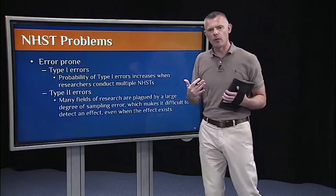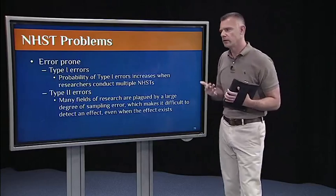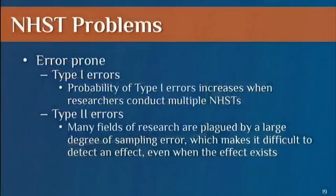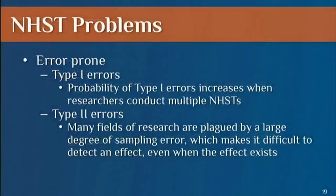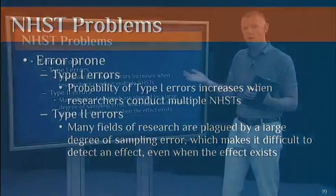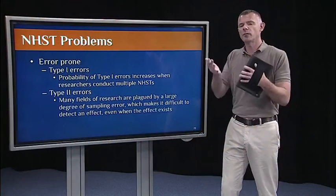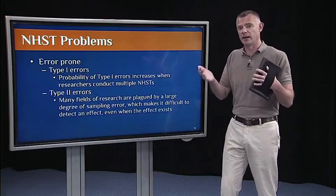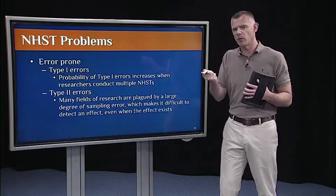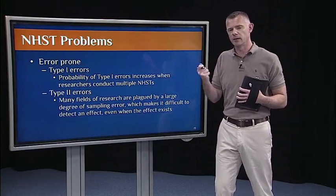The next problem is we know it's error prone, right? So, from the last segment, we know that there's always a possibility of type one errors and type two errors. And it's actually worse than I outlined in the last segment. So, the probability of type one errors actually increases and can get really high as researchers conduct multiple tests. Especially multiple tests on the same data. These are called dependent tests. If you don't correct for the multiple tests, then that probability of a type one error just keeps compounding and inflating. So, the probability of type one error can be really inflated if researchers aren't careful.